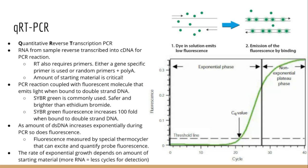As the PCR reaction cycles and the amount of DNA doubles after each reaction, the fluorescence intensity will also double after each reaction. This can be measured in a special qPCR thermocycler that takes a snapshot of green fluorescence from SYBR Green after each round to gauge the amount of double-stranded DNA in the mixture. This means that the sooner fluorescence becomes detectable — called the Cq value — the more starting material we began with.